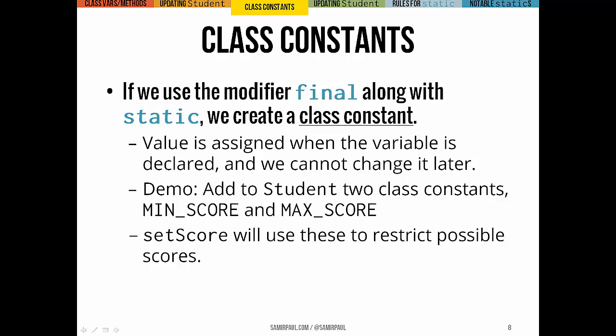If we use final along with static, what we end up with is a class constant. A class constant gets assigned as soon as the variable is declared and it can never be changed afterward during that run of the program. We can modify the Student class by adding two class constants: MIN_SCORE and MAX_SCORE. We'll use these constants in the method setScore to hold the score on any particular test between the min and max scores possible — say 0 and 100. By convention, class constants are capitalized with words separated by underscores.